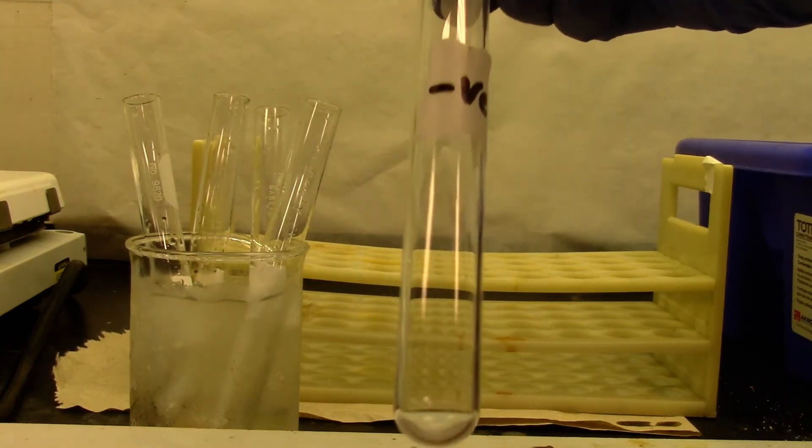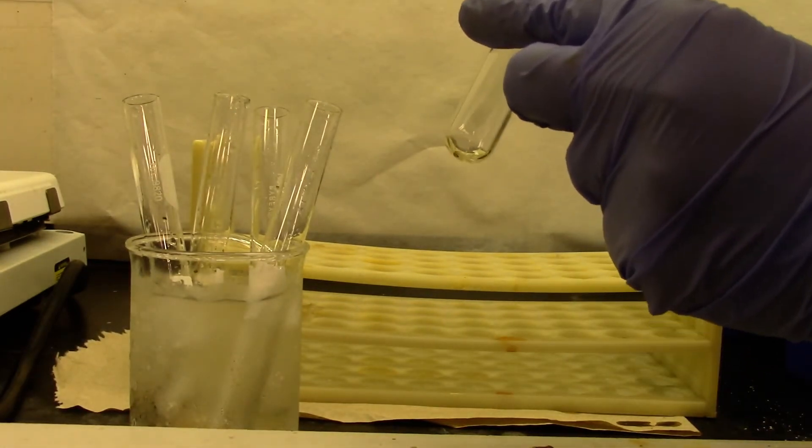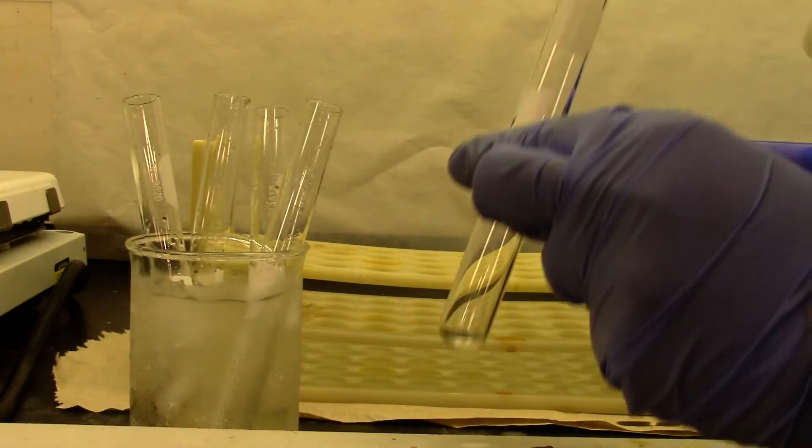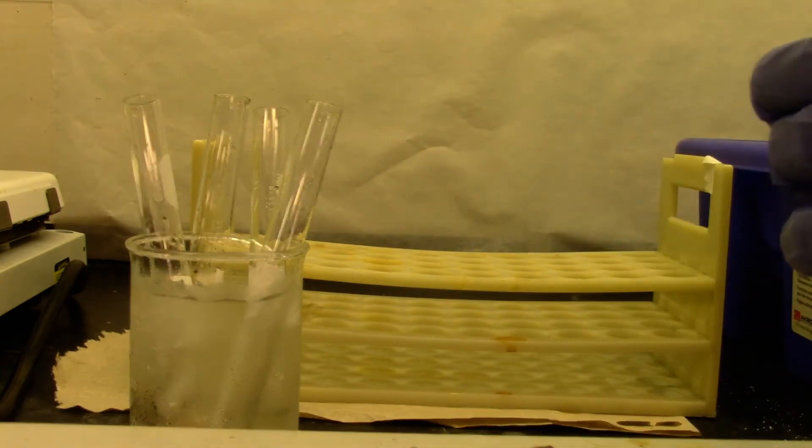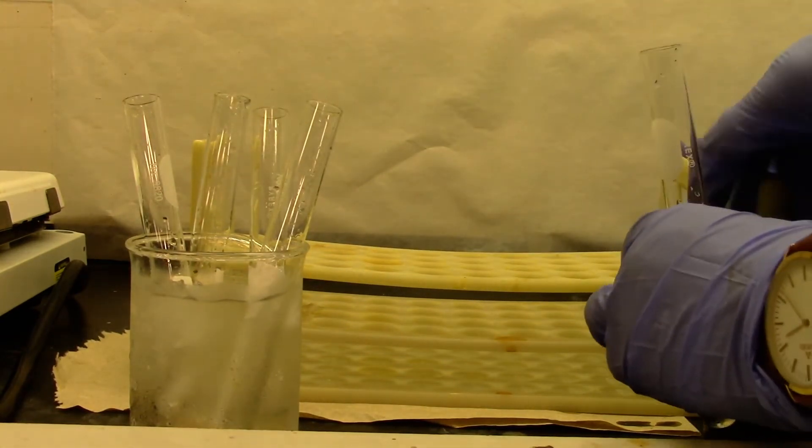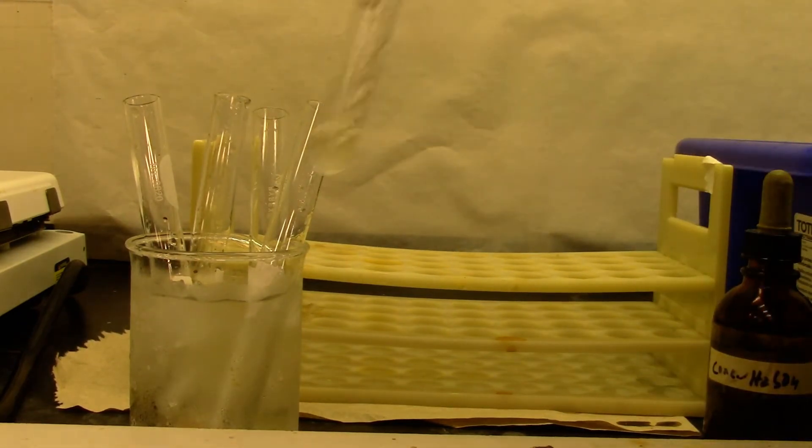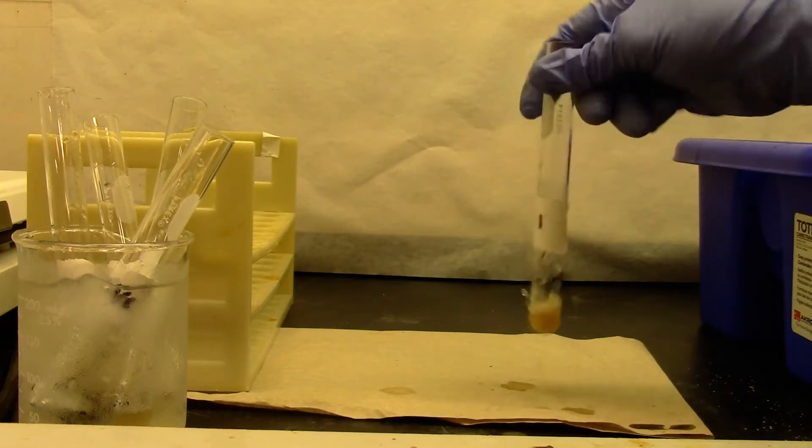For a negative test, I am going to use toluene, and then about 2 mL of water, and then 8 drops of sulfuric acid. I will place it in the ice bath as well.